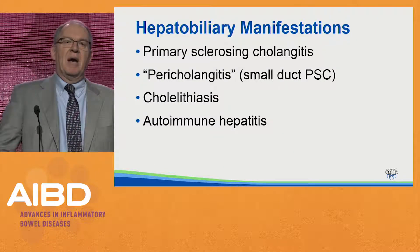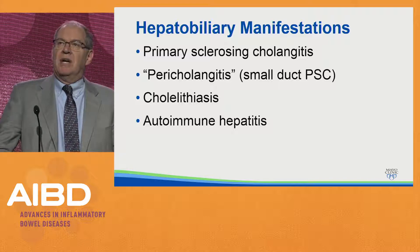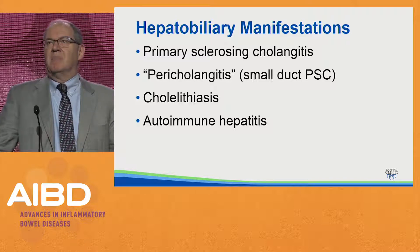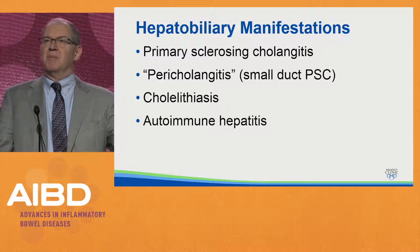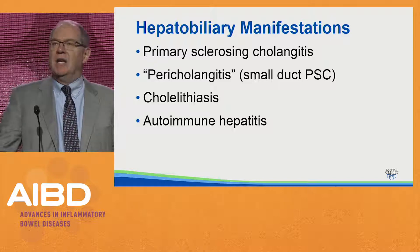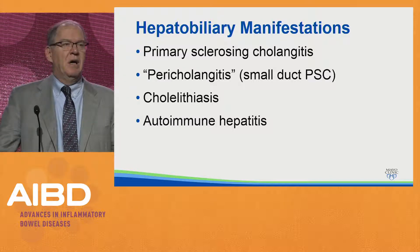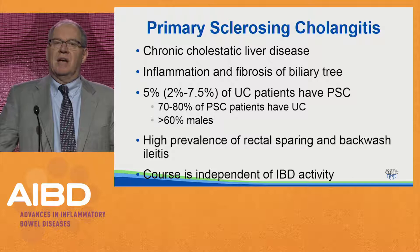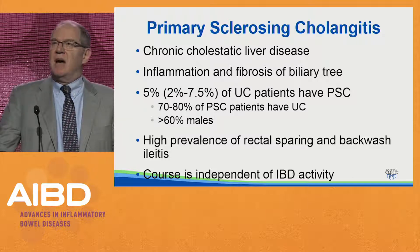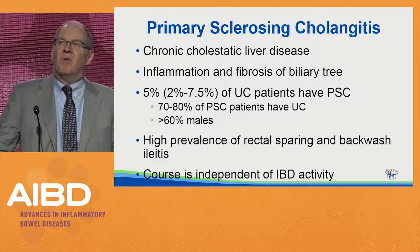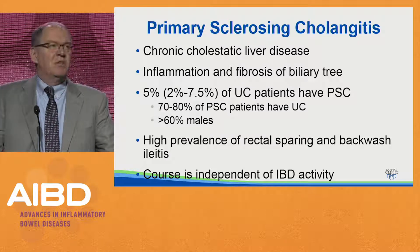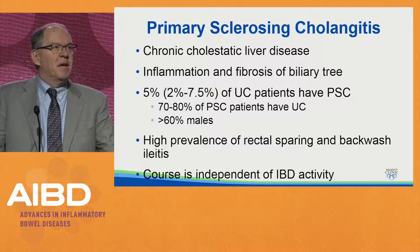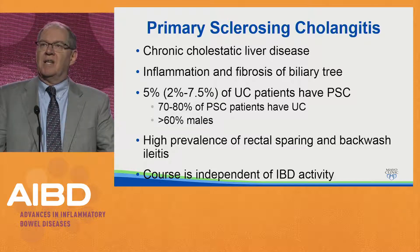We're going to talk about primary sclerosing cholangitis and small duct PSC, which is basically PSC without visible bile duct abnormalities on ERCP or MRCP, and briefly cover some other conditions. PSC is a chronic cholestatic liver disease — when you see an elevated alkaline phosphatase, you've got to think about this. Roughly 5% of your ulcerative colitis patients will ultimately be diagnosed with PSC.